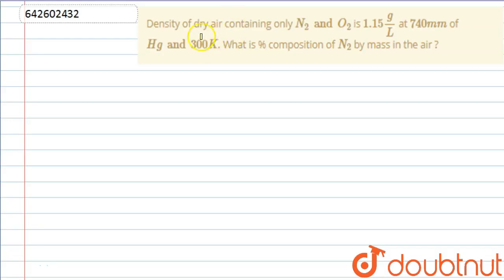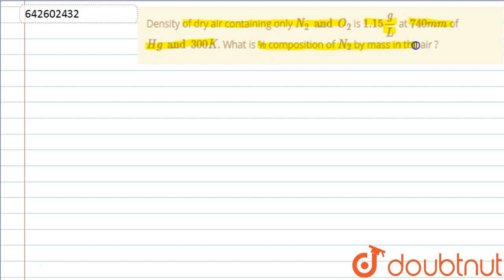Hello everyone, let's start with this question. The question says: density of dry air containing only N2 and O2 is 1.15 gram per liter at 740 mm of mercury and 300 Kelvin temperature. We have to find the percentage composition of N2 by mass in the air. We are given a mixture of two gases, N2 and O2.